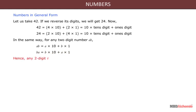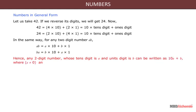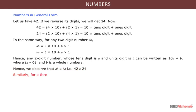Hence any two digit number whose tens digit is a and units digit is b can be written as 10a plus b, where a is not equal to 0 and b is a whole number. Hence we observe that ab is not equal to ba — that is, 42 is not equal to 24.